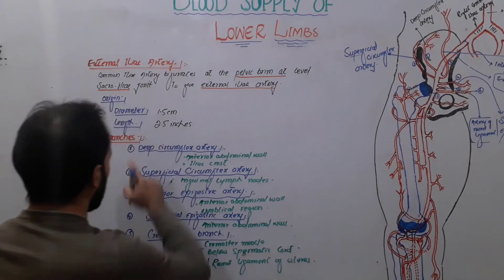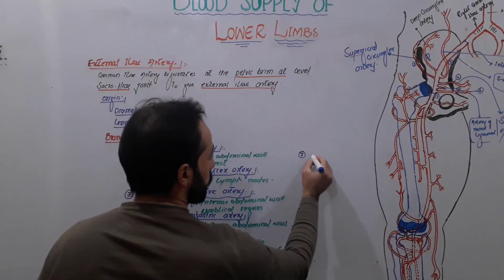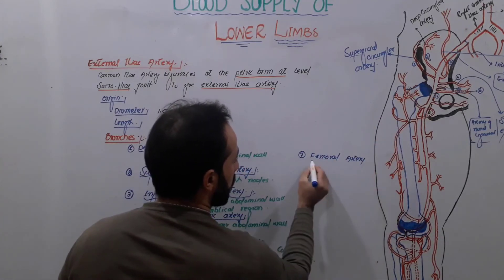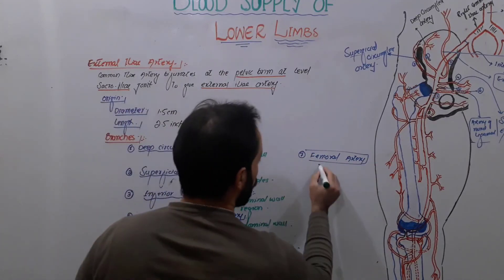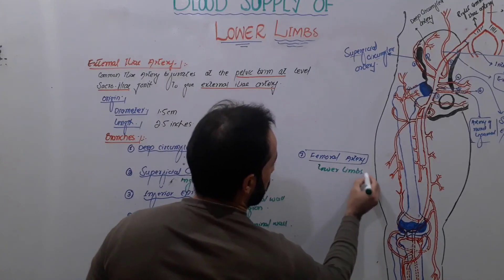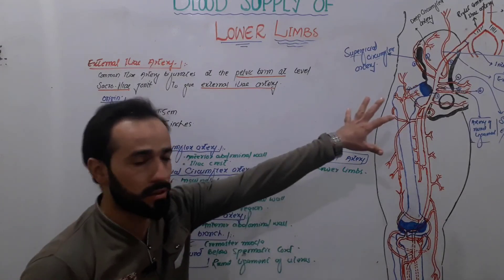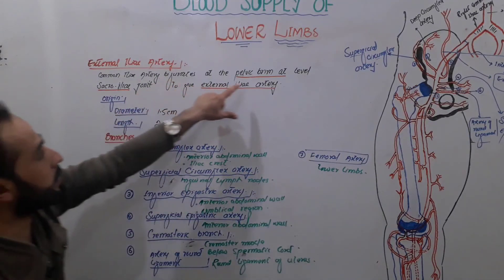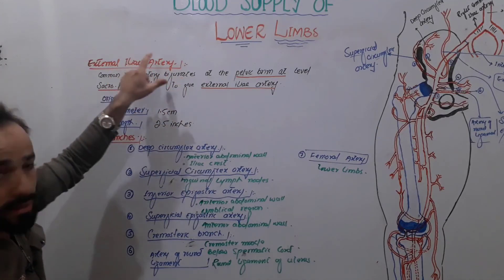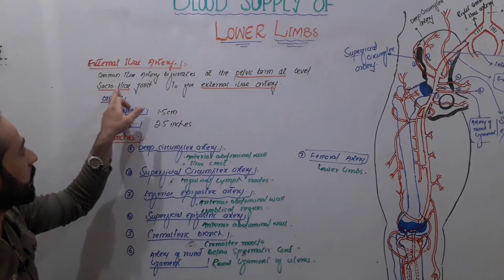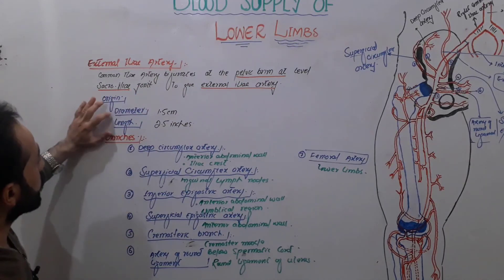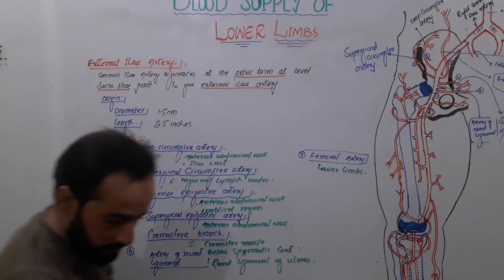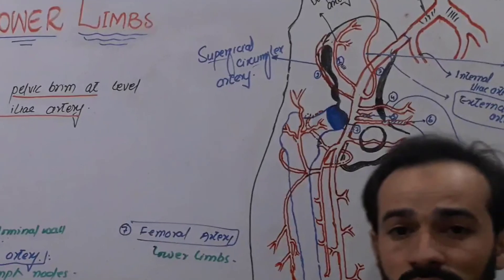The seventh and last branch of the external iliac artery is called the femoral artery, which we will discuss further. This is the main artery responsible for supplying blood to the lower limb. So these seven branches are the branches of the external iliac artery. To recap: it arises at the bifurcation of the common iliac artery at the pelvic brim at the level of the sacroiliac joint, with a diameter of about 1.5 cm and a length of about 2.5 inches.